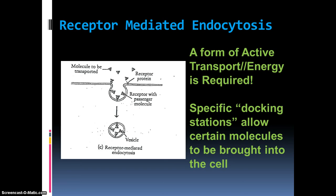There's also a special kind of endocytosis called receptor-mediated endocytosis. It works a little differently — the idea is that it's trying to find specific things. Shape and function go together, so we have receptors that bind with whatever we're trying to bring in, called the 'passenger molecule.' The receptor protein's shape matches up with the passenger molecule, they bind, and then they're brought into the cell using a vesicle. It's called receptor-mediated because we're using a receptor protein.